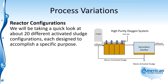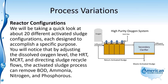We'll be taking a quick look at about 20 different activated sludge configurations, each designed to accomplish a specific purpose. By adjusting the dissolved oxygen level, the hydraulic retention time, the MCRT, and directing the sludge recycle flows, the activated sludge process can remove BOD, ammonia, nitrogen, and phosphorus.